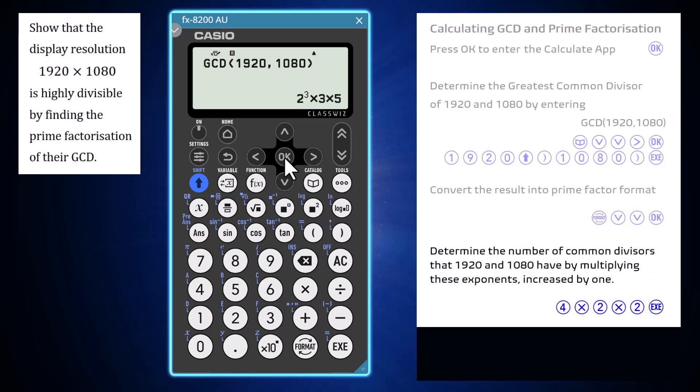We can use this information to find the number of factors that 120 has. It can be done by increasing the exponents of this prime factorization by 1 and then multiplying them. This gives 4 by 2 by 2, which is 16, meaning that 1920 by 1080 has 16 divisors.